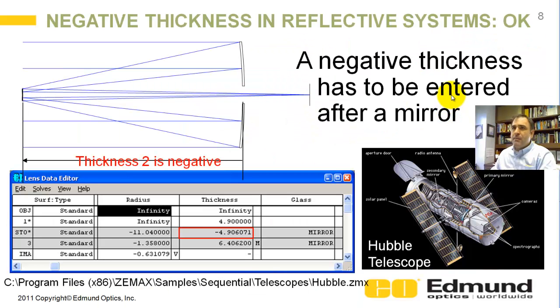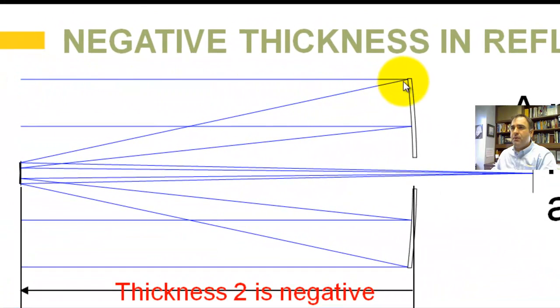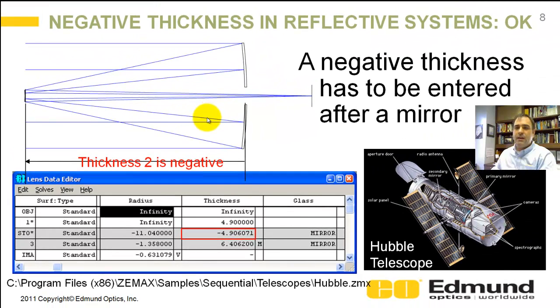So let's talk about some negative thicknesses that are okay. And I've put this in green here. If you've got a reflective mirror, so for instance, you've got light that starts here, this is the Hubble, hits a mirror, and it's going to come back on itself. This is a negative thickness. And again, we're using a Cartesian coordinate system. So you can see after this first mirror here, your thickness is a negative 4.9 meters. It's perfectly acceptable. This is a case where you want a negative thickness.